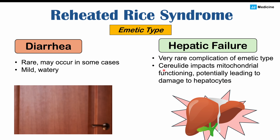In some very rare cases, cerealide may lead to damage to mitochondrial functioning, leading to damage to hepatocytes. We may see increased ALT and AST — these are liver enzymes — and some other findings that may indicate liver failure. If patients do get hepatic failure, they're more likely to be very young children or those who are immunocompromised. Symptom onset occurs within 30 minutes to six hours, and most often the signs and symptoms will resolve on their own within 24 hours, unless we have some of these severe complications.